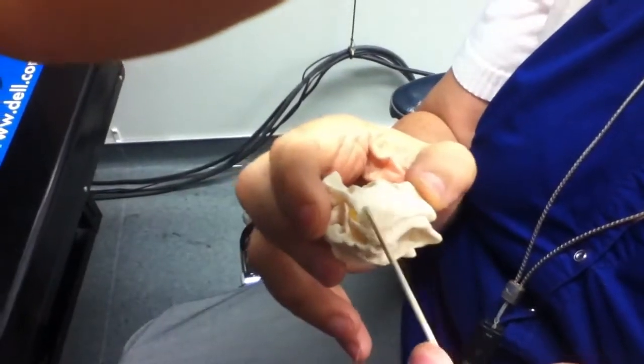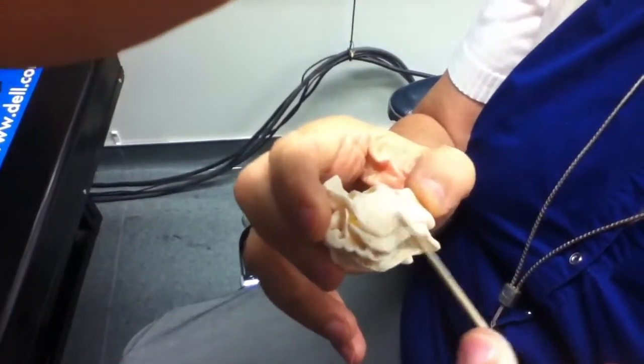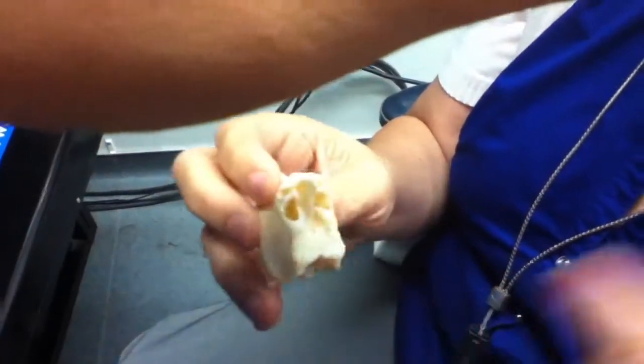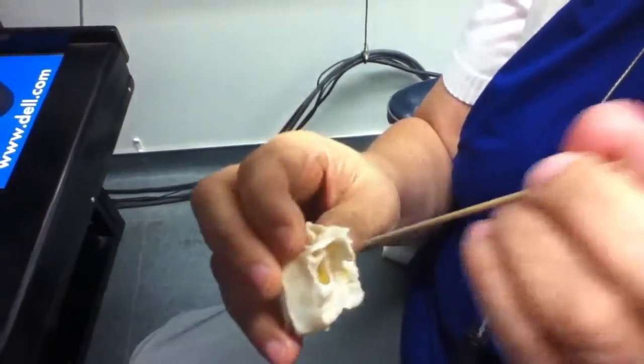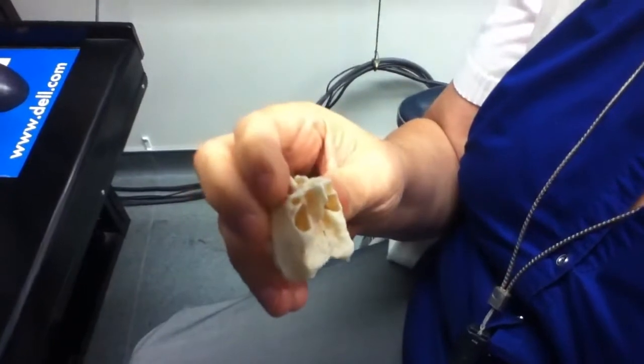And this is the orbital plate or lateral mass. And this right here are the ethmoidal sinuses. Any questions?